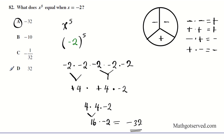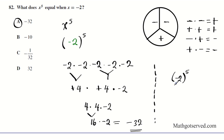The answer is option A. Another way to think about this: any time you have an odd power, the minus always comes out. Any time you have an even power, the minus always disappears. So as a shortcut — negative two to the fifth: since five is odd, the minus comes out, giving minus two to the fifth. Two to the fifth is thirty-two, so you have negative thirty-two. That's another way of doing it.